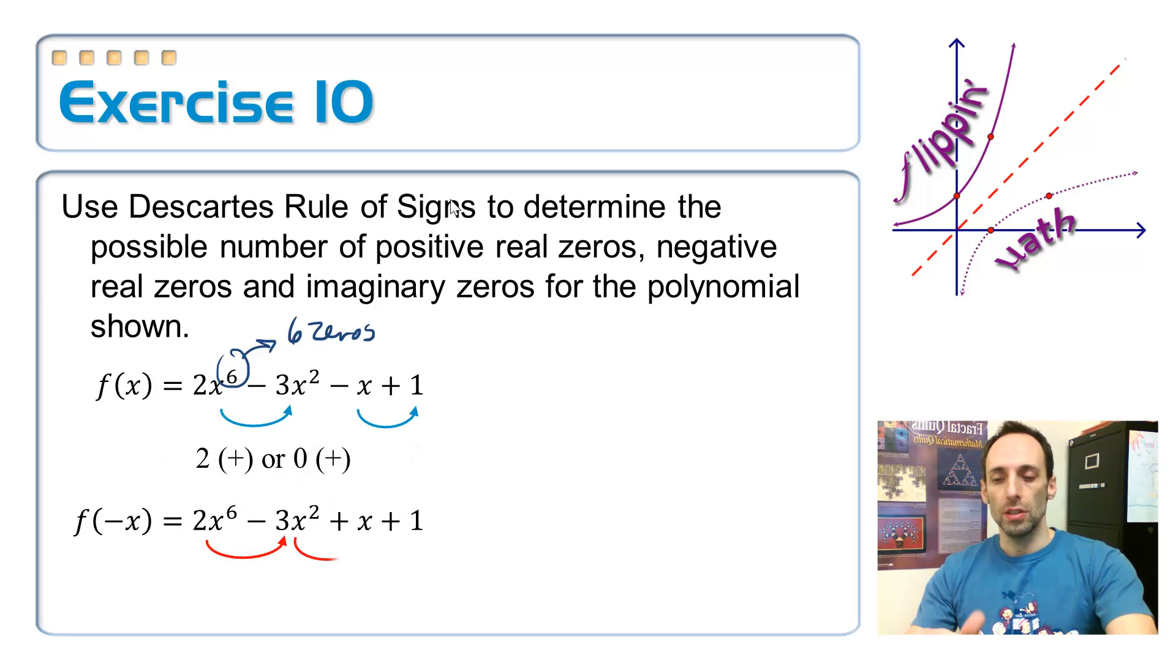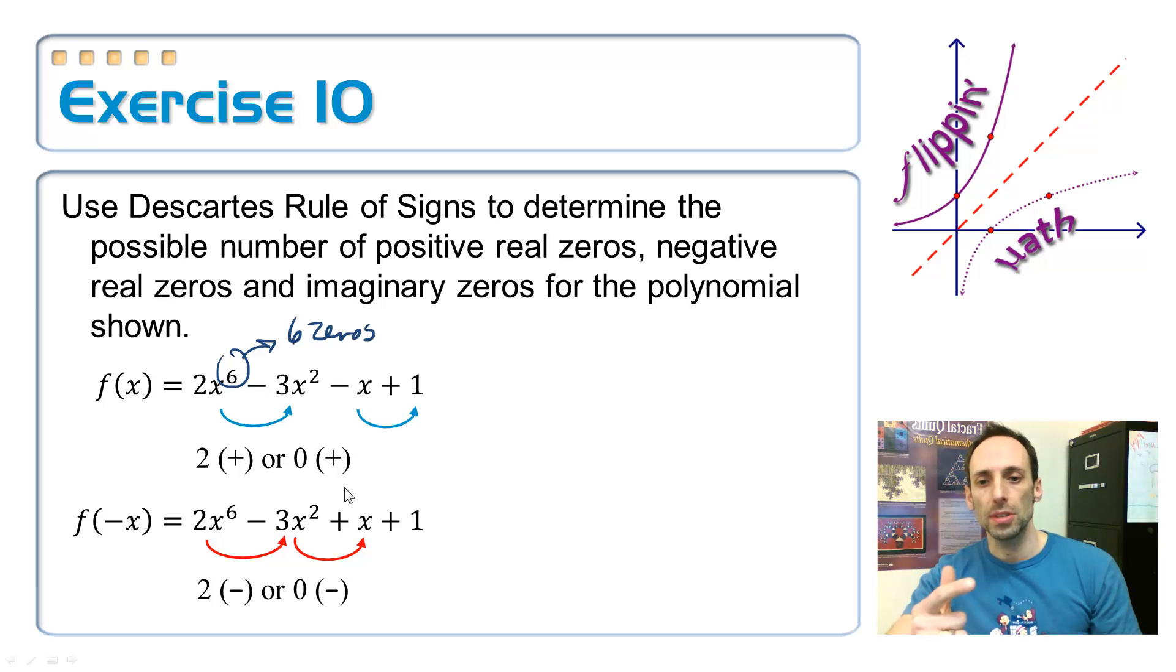So the next thing that I need to do is I need to compute f of negative x. So look at the original function. Anything that has an even power, it's going to keep the same exact sign. Even power keeps the same exact sign. This is an odd power. It's raised to the first power. So it was negative, but whenever I stick negative x in there, negative times negative makes that one positive. It doesn't do that for the even ones because when you square a negative, it stays positive. And then plus 1, that thing doesn't change. Now let's count up the sign changes in this new function. So from positive to negative right here from the first two terms, there's one sign change. And then from negative to positive, from the negative 3x squared to the x, there's another one. So there's two possible sign changes. That's two negative real solutions, or I take two away from that, an even number, and I get zero negative ones.